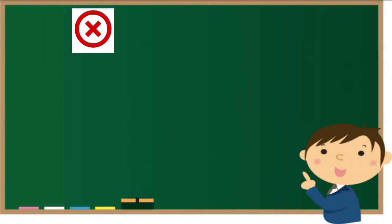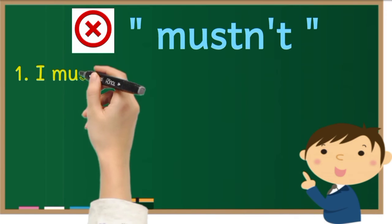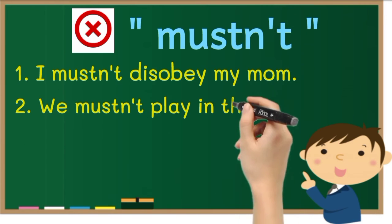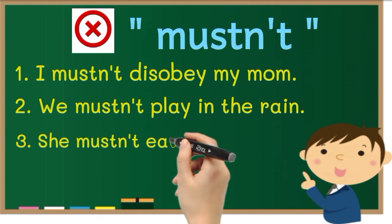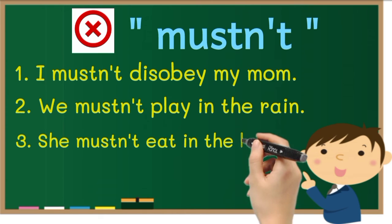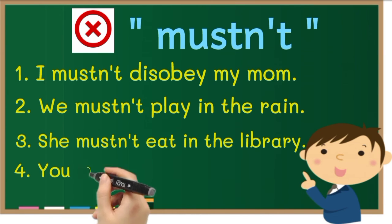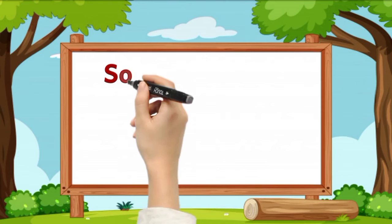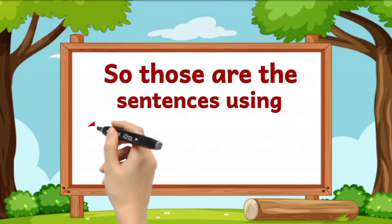More sentences using 'mustn't': 1. I mustn't disobey my mom. 2. We mustn't play in the rain. 3. She mustn't eat in the library. 4. You mustn't shout at anyone. Those are the sentences using 'mustn't'.